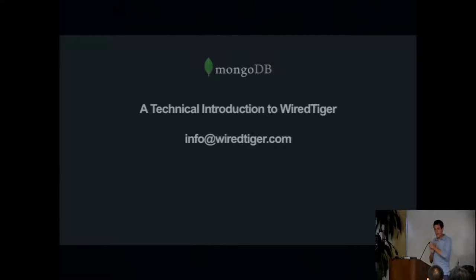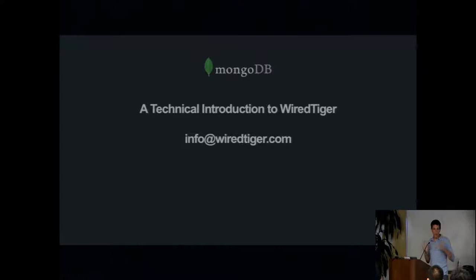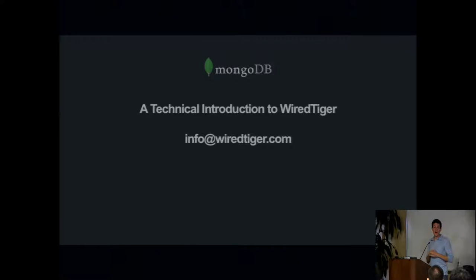After working on BSD — not only is he an awesome kernel hacker — he went and did a startup called Sleepy Cat that commercialized the open source embedded database Berkeley DB. They were bought in 2006 by Oracle. Then Keith was right back at it again, and now he has a new startup that got bought by MongoDB last year called WiredTiger. That's what he's here to talk about today. We're really happy to have Keith here.